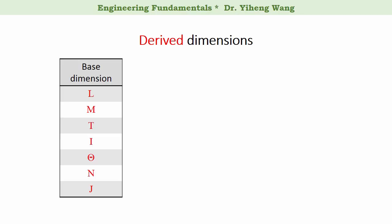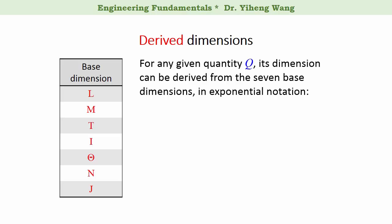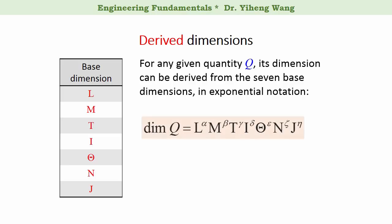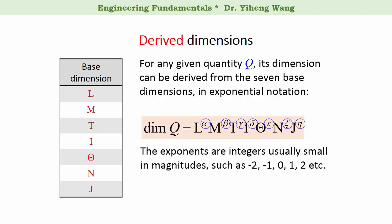So now we have the seven base dimensions. For any other quantity — for example, quantity Q — its dimension is derived from these seven base dimensions in the following form, which is simply the product of the seven dimensions each raised to a certain power. These exponents — alpha, beta, gamma, etc. — are simply the first seven letters in the Greek alphabet, and they are usually small integers such as −2, −1, 0, 1, 2, etc. If the exponent is 0, then that base dimension does not appear in the derived dimension.